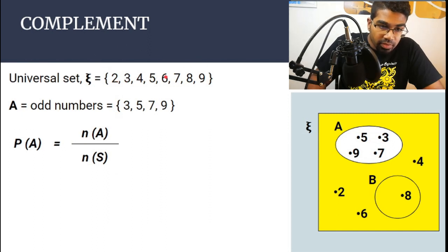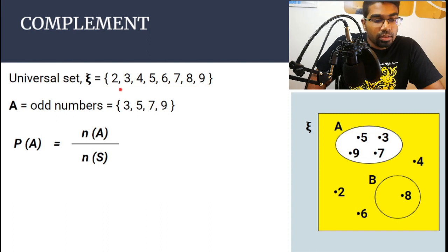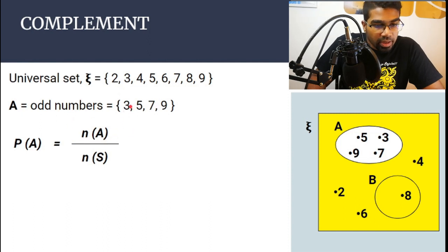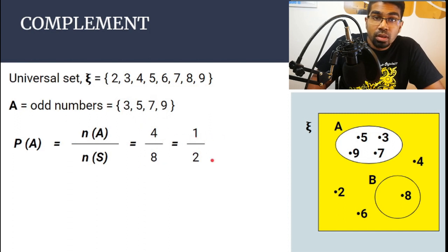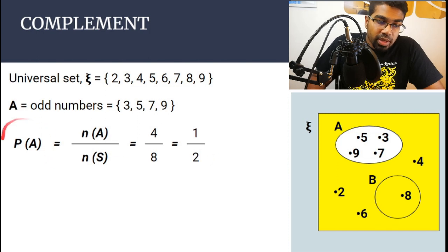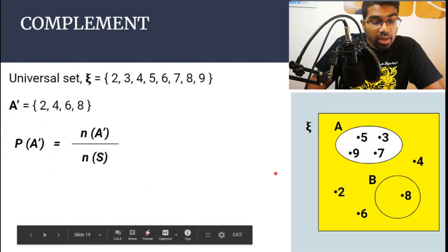The number of times event A occurs is four — elements 3, 5, 7, 9. So P(A) = 4 out of 8, which gives us one over two. That is the probability of A.